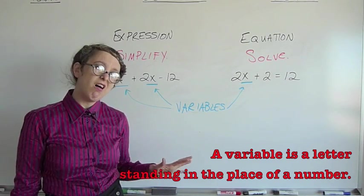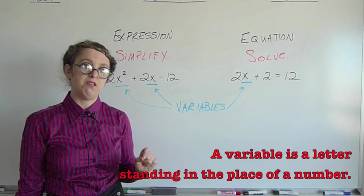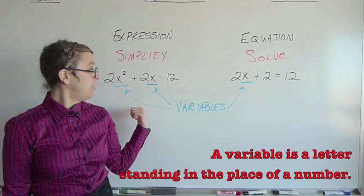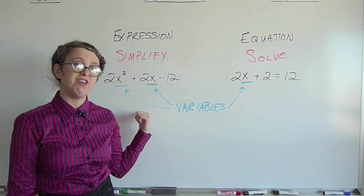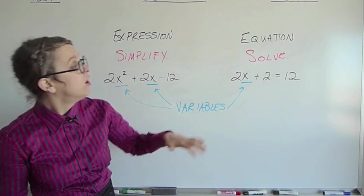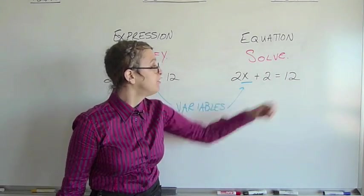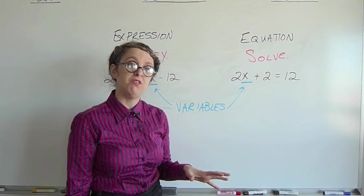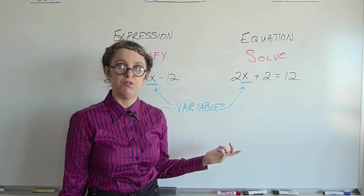And variables, what they are, are letters standing in the place of numbers. With the expression, we're never going to be able to figure out what x equals. We're just going to be learning some new skills. Over here, with an equal sign, we're actually going to be able to someday figure out what x equals.